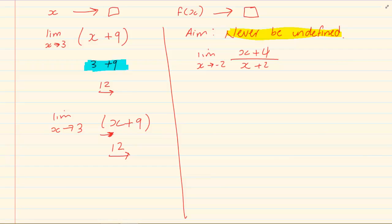If I have to substitute minus 2 into x, then I would have minus 2 plus 2, giving me a denominator of 0. And that would immediately make my equation undefined.